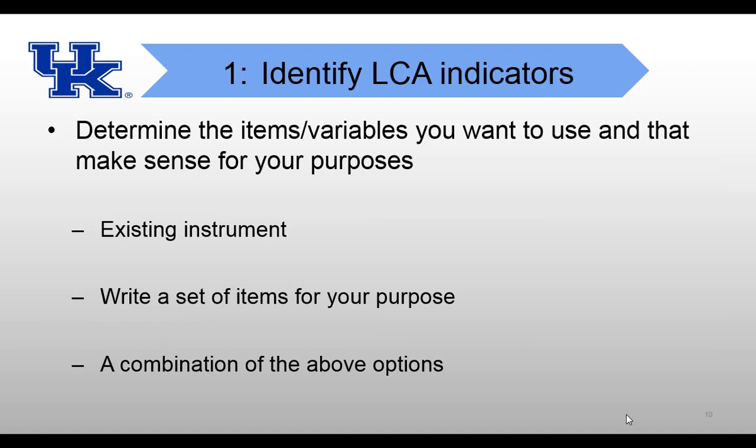Step one: identify LCA indicators. How can we determine the items or variables we want to use? There are different ways. The first way is to use an existing instrument — go to the literature and find variables related to your topic. Or, write a set of items for your own purposes. Or combine both options. Here is an example: suppose researchers have an online survey measuring students' motivation that took two hours to finish, and they want to investigate invalid respondents in the survey.